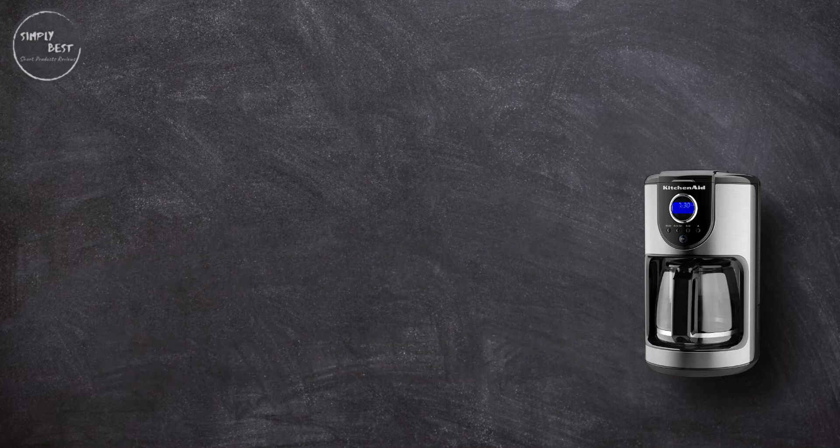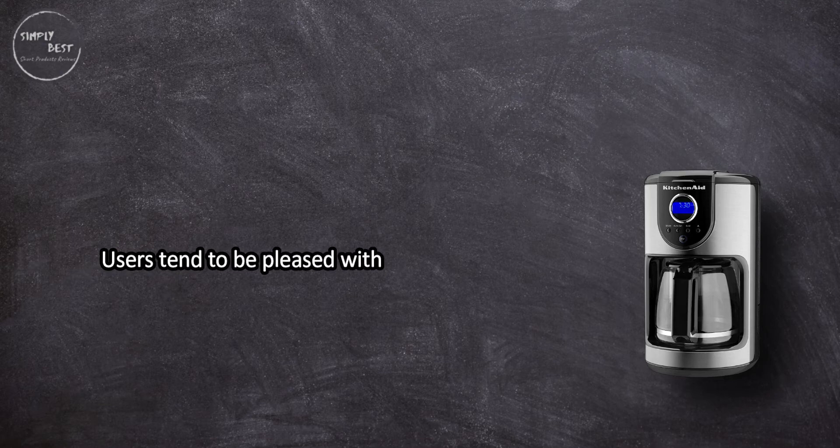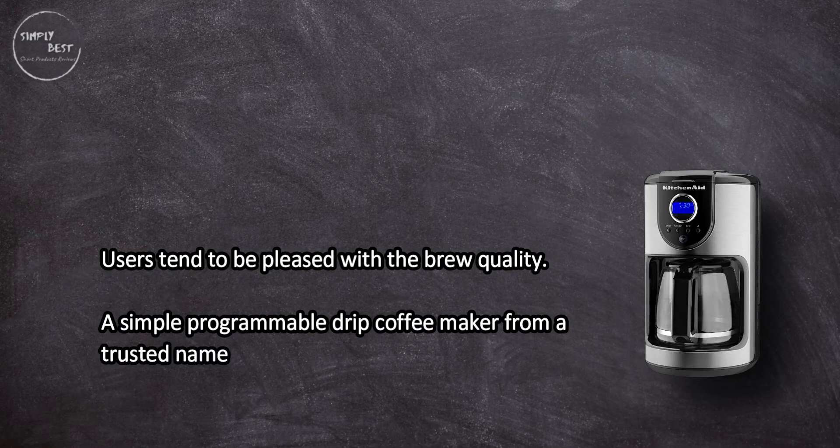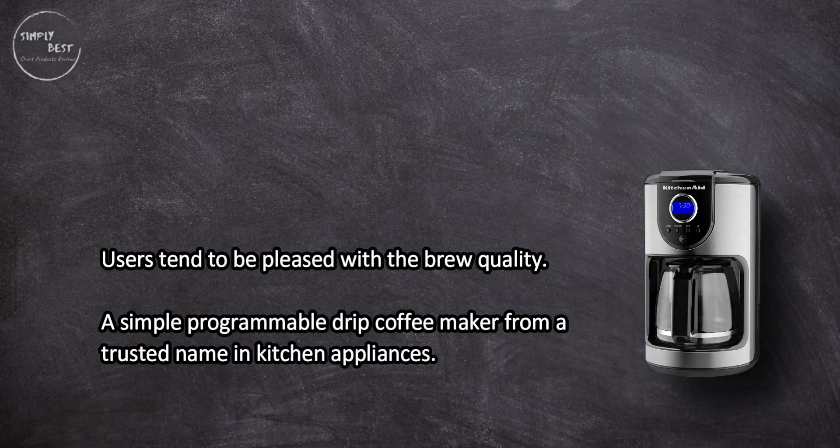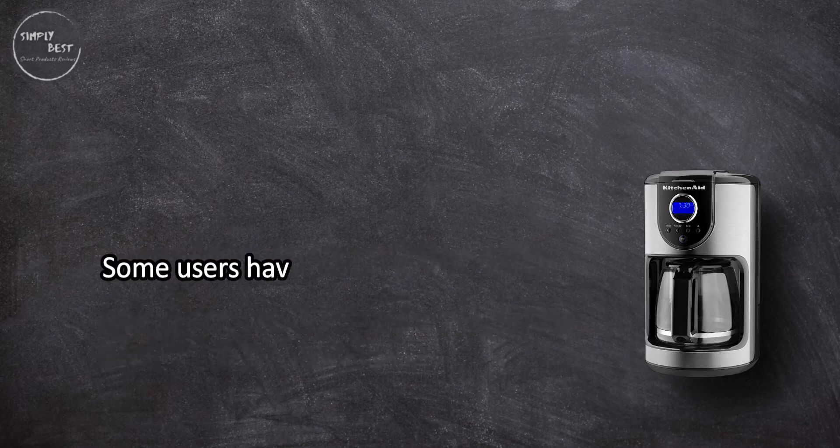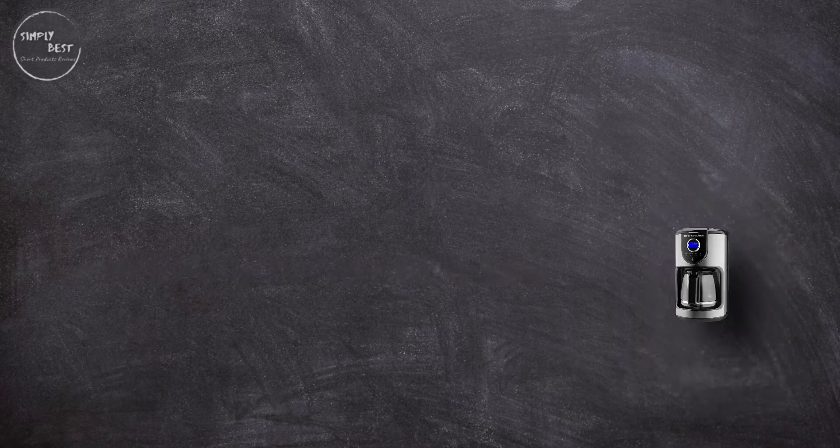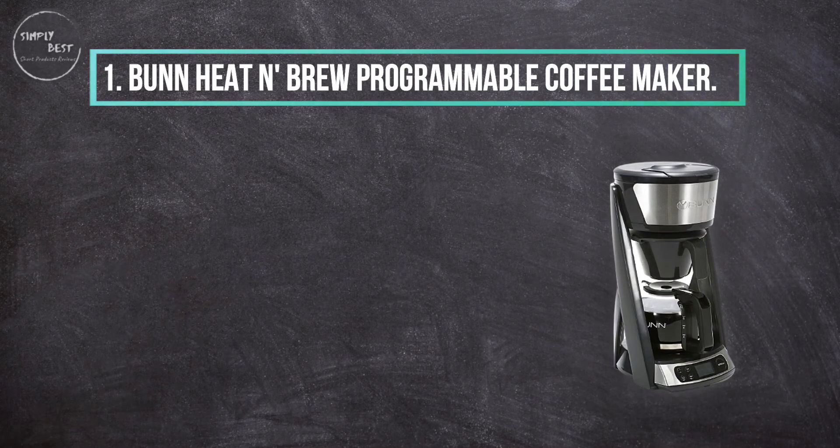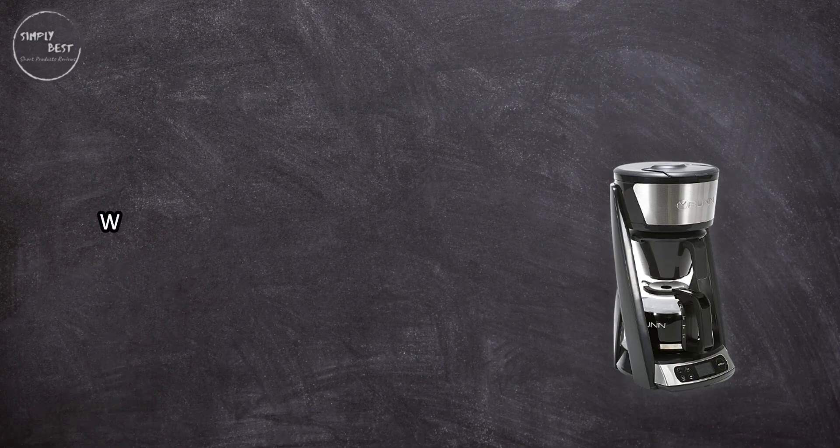Users tend to be pleased with the brew quality—a simple programmable drip coffee maker from a trusted name in kitchen appliances. Some users have issues with leakage. At number 1: Bunn Heat N' Brew Programmable Coffee Maker.